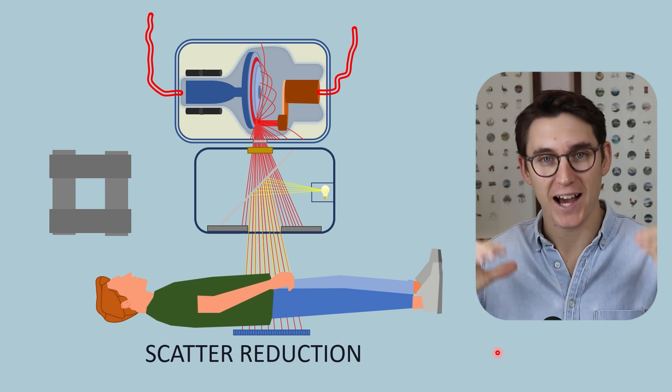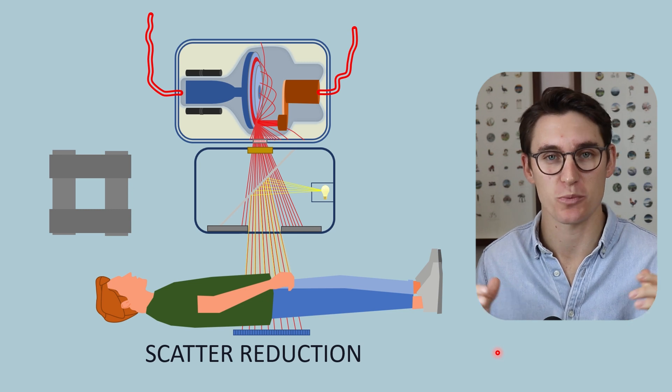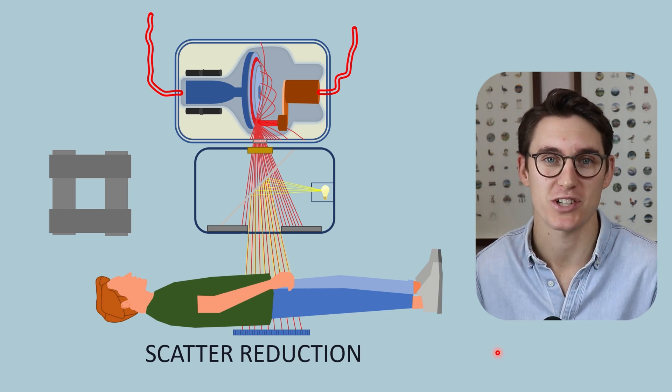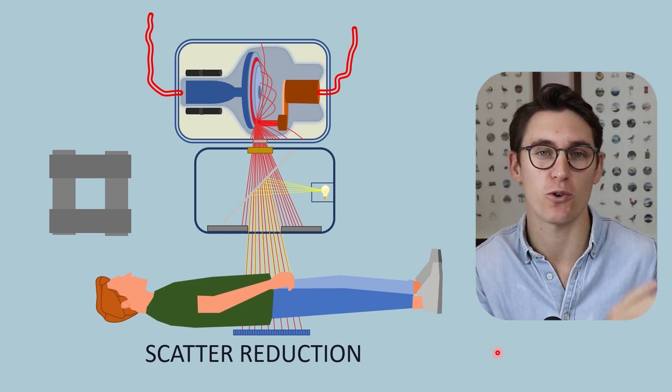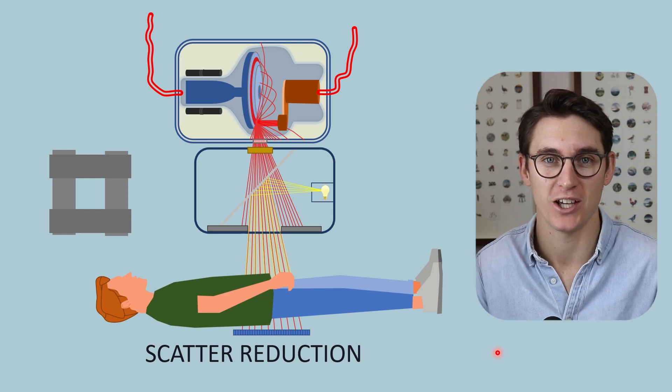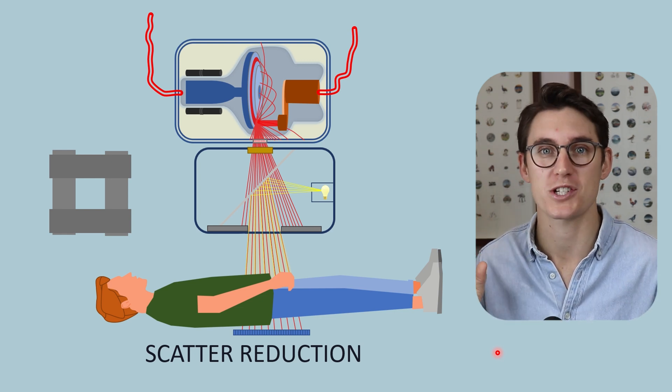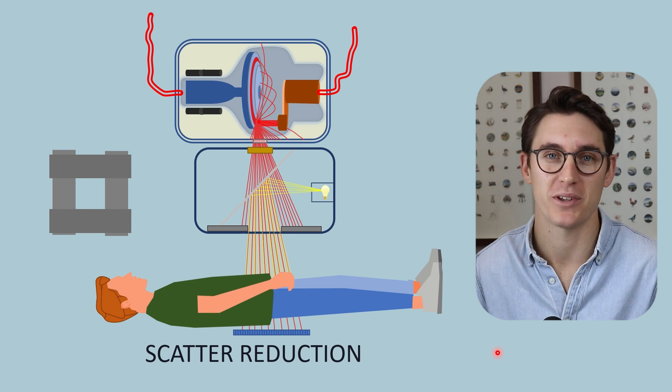Now today we're going to look at how we can reduce that scatter contribution to our final image, and a lot of it will be related to those four factors that we looked at in our last talk. So if you haven't watched the last talk, go watch that first then follow it up with this talk here.